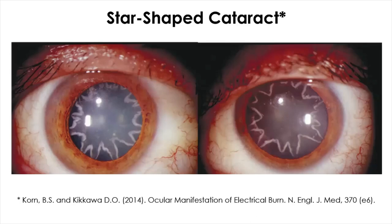Two years after the injury, there was a retinal detachment in the left eye and the patient underwent repair. At a 10-year follow-up visit, the patient's visual acuity was 6/30 in the right eye, but in the left eye he could only count fingers. While it's not entirely clear why the cataracts take on a stellar shape, the ultimate takeaway is quite clear: be safe around electricity.